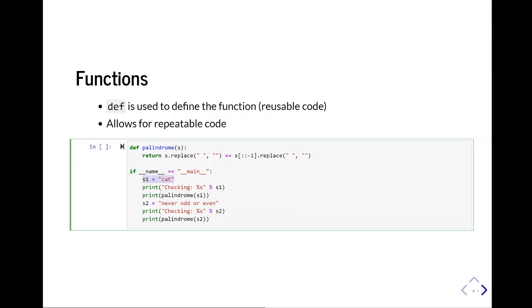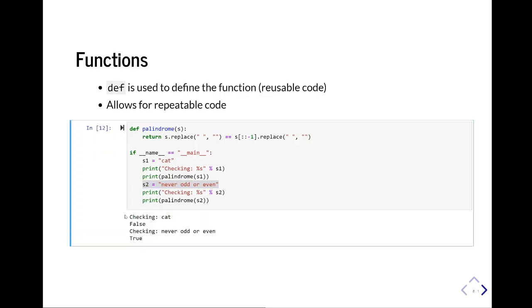So I'm going to say my s1 is cat, and I'm going to check if it's a palindrome. Then I'm going to say s2 equals never odd or even, and I'm going to check if it's a palindrome and get back the value. And this is going to return a boolean. So cat is not a palindrome, but checking never odd or even is a palindrome.